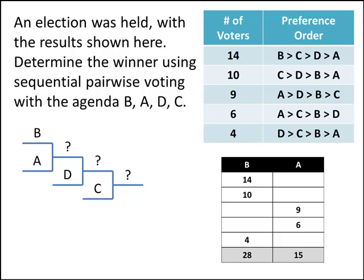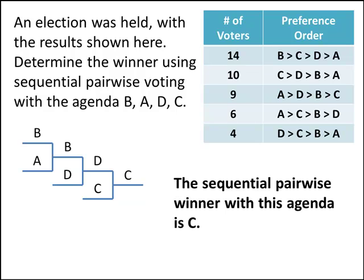We start out with B versus A, and B will beat A 28 to 15. Our next matchup is B versus D, and D wins that 23 to 20. Our final matchup is D versus C, and C beats D 30 to 13. So now with this different agenda, C is the winner of the sequential pairwise method.